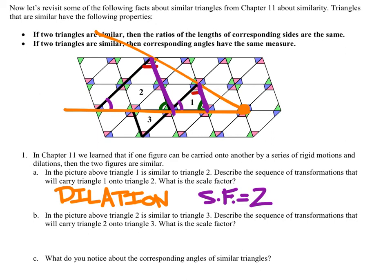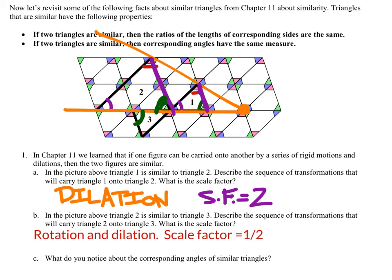Triangle 2 is similar to triangle 3 — describe the sequence of transformations to carry triangle 2 to triangle 3 and give the scale factor. This one is making the triangle smaller, and it appears we will need two transformations. A reflection wouldn't work because of the location of the angles. To simplify it, we need just a rotation and a dilation.